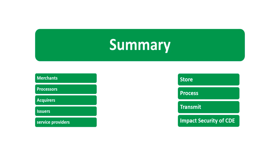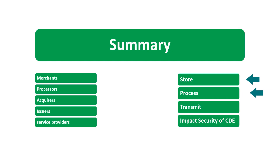As a summary: PCI DSS applies to all entities involved in payment card processing, including merchants, processors, acquirers, issuers, and service providers, and also applies to all other entities that store, process, or transmit cardholder data or sensitive authentication data, or somehow could impact the security of the CDE. This last statement — 'could impact the security of the CDE' — was included in the new version 4; you won't see this in version 3.2.1. And as promised, let's have a look at the PCI DSS documents.